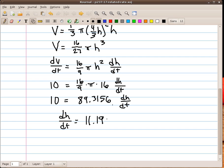I'm getting ahead of myself here. It's 0.11196. And that is in meters per minute. But we need our answer in centimeters per minute. So I have to multiply that by 100 centimeters per meter. And that's where the 11.196 comes from.